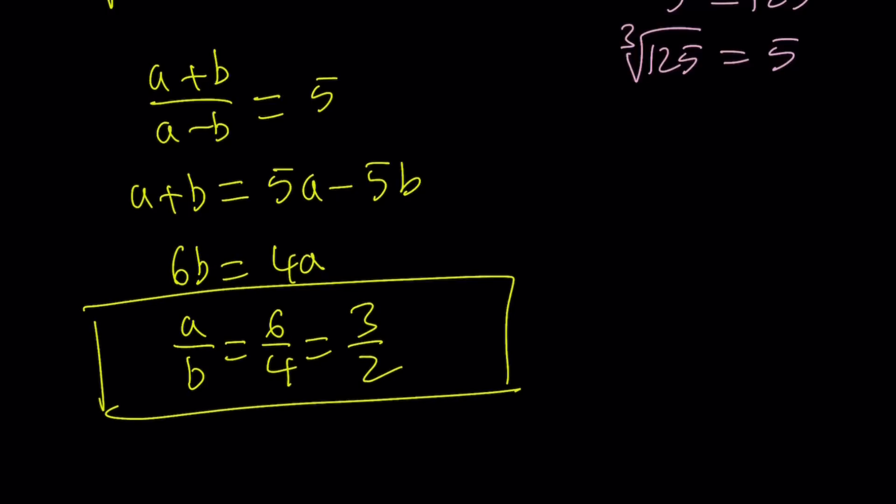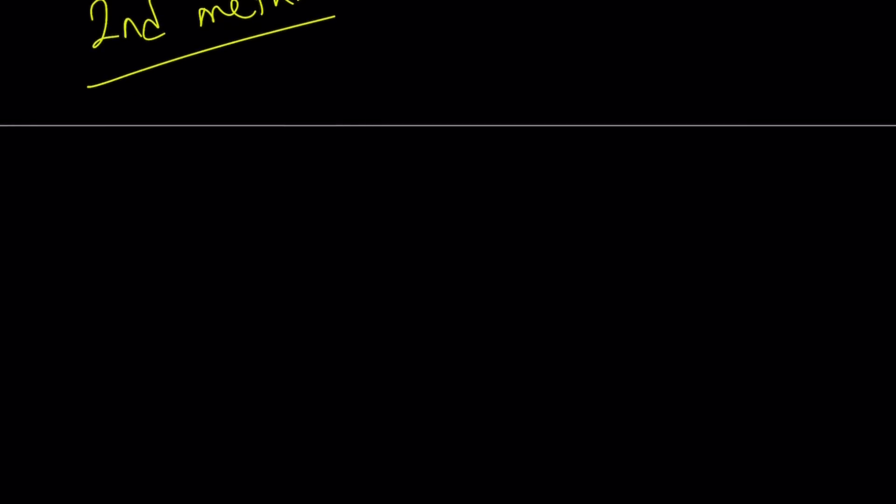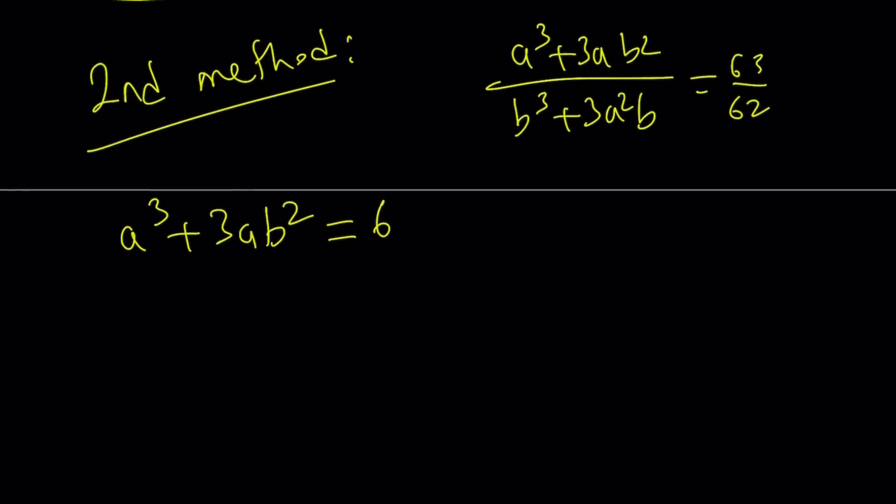Awesome. So that is the first method, componendo dividendo. Let's go ahead and take a look at the second method. My second method is a little different because we're going to be solving a cubic equation here, which is not very easy to do all the time. But anyways, since our ratio is 63 to 62, I can safely say that. So let me go ahead and copy that original problem here first before I proceed with the solution. So we're given this ratio or proportion.